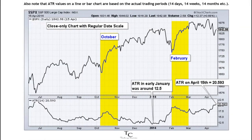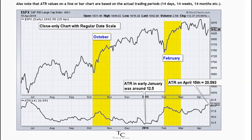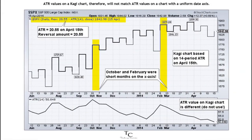Also note that ATR values on a line or bar chart are based on the actual trading periods — 14 days, 14 weeks, 14 months, etc. ATR values on a CAGI chart, therefore, will not match ATR values on a chart with a uniform date axis.